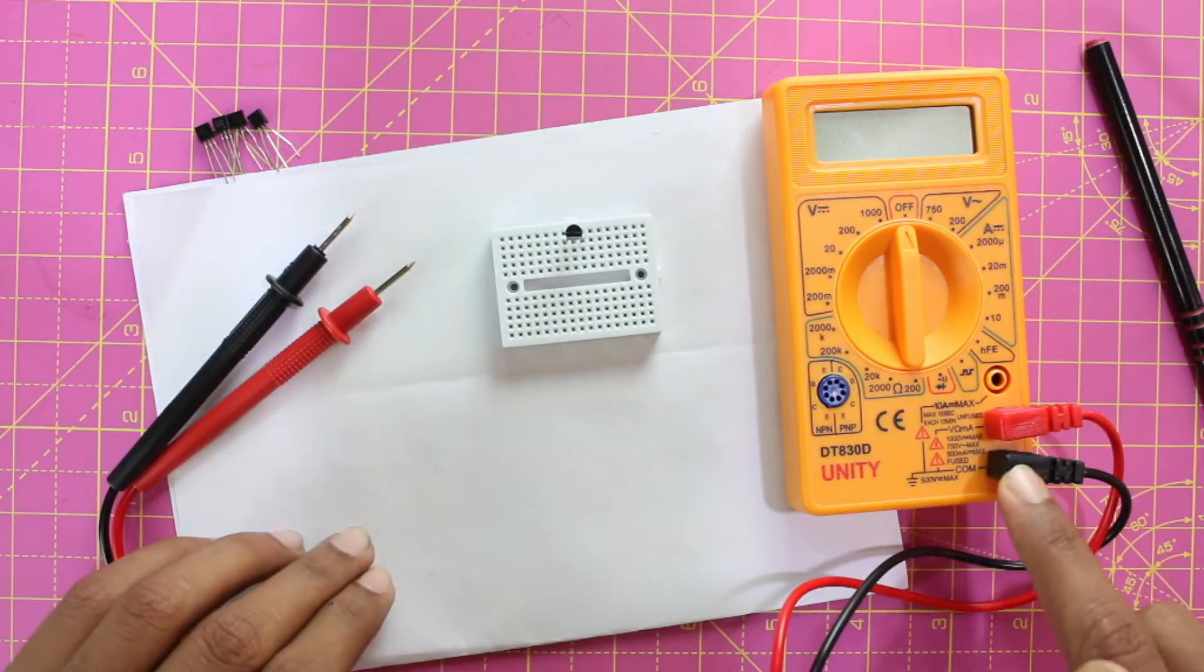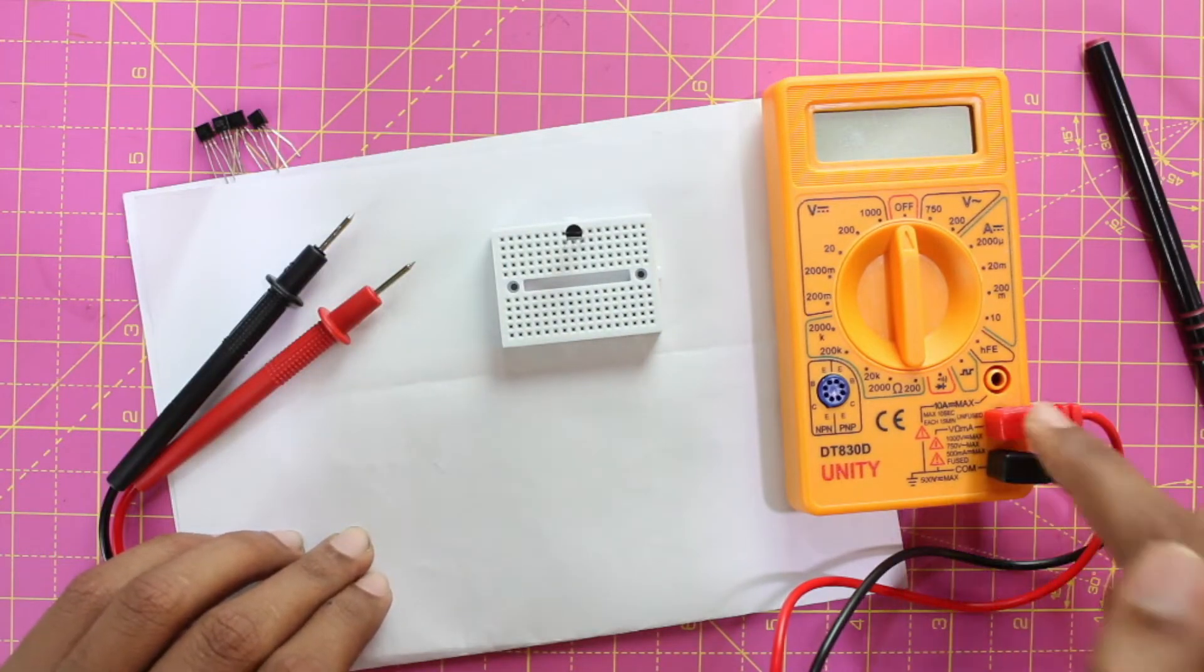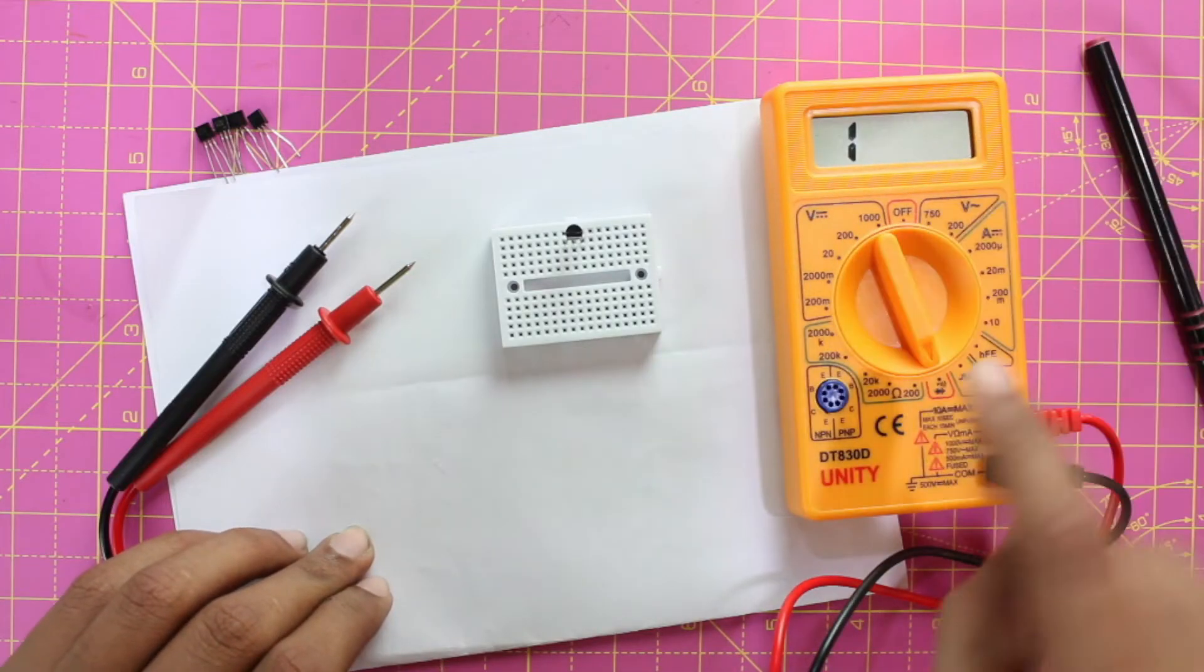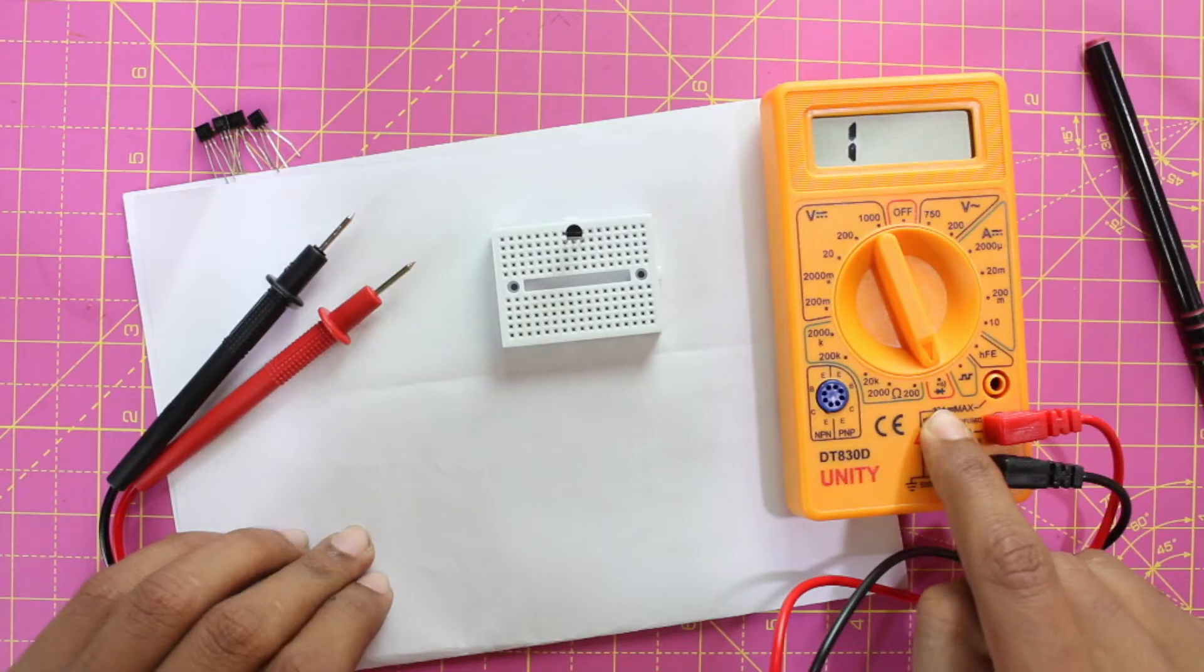Make sure the black probe of your multimeter is connected to the COM and your red probe is connected in voltage mode. Then set your multimeter in diode mode. You can identify diode mode using the diode symbol over here.